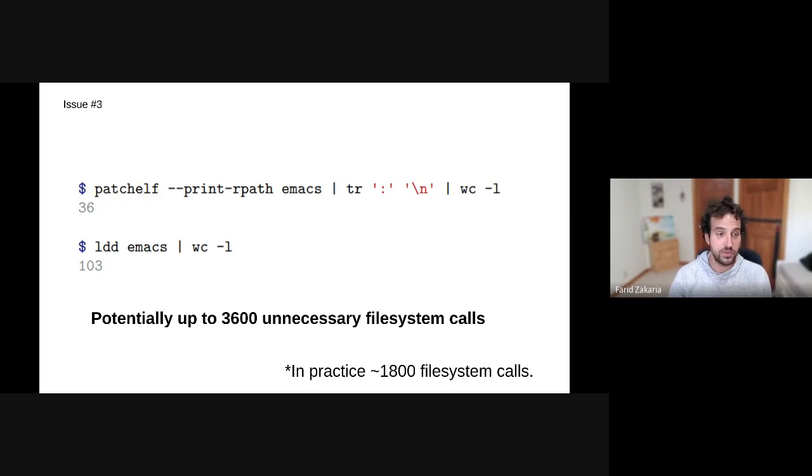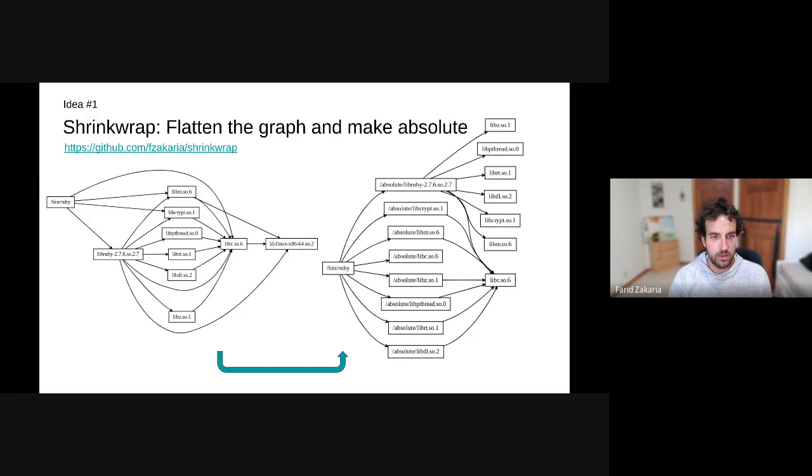That's about the issues present. Now I'm going to propose some solutions, some which we've implemented already, and some more as a call to arms or ideas I'm exploring. The first idea we've called shrinkwrap, and it's the idea of flattening the graph and pointing all libraries to their absolute path.